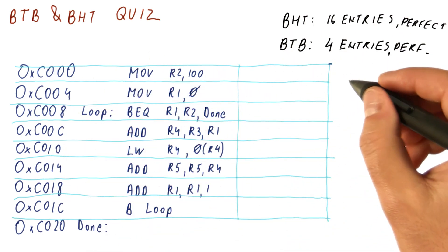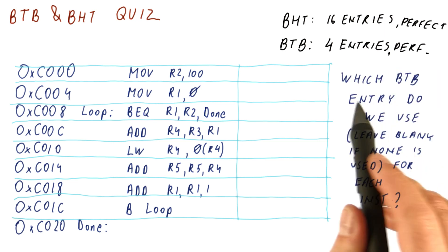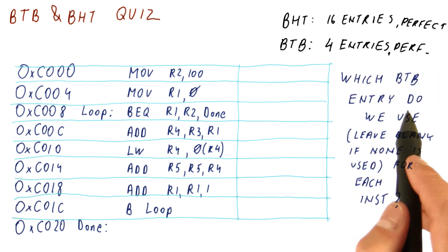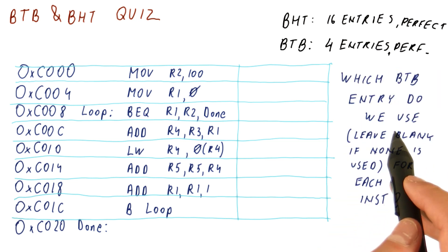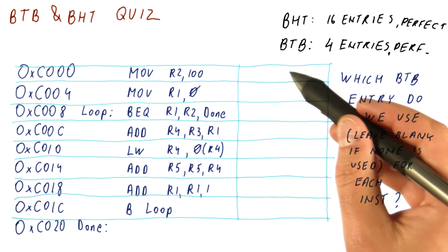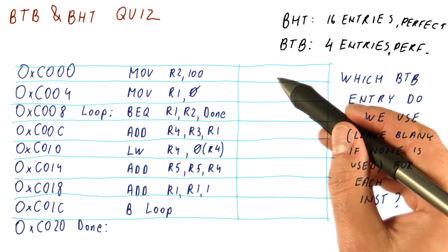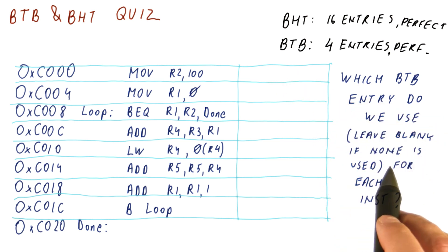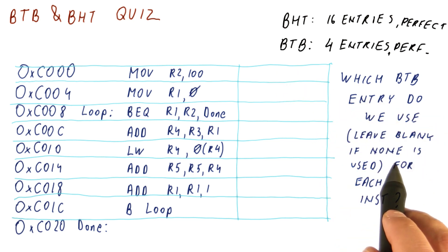The question for you now is: which BTB entry do we use for each of these instructions? Leave the field for the instruction blank if none of the BTB entries is used by it.